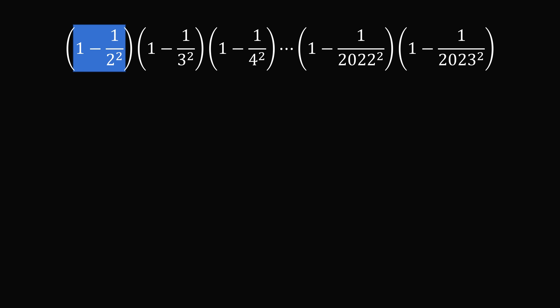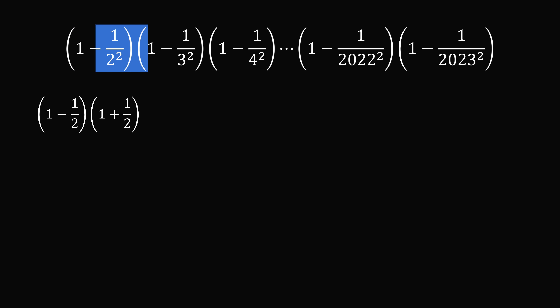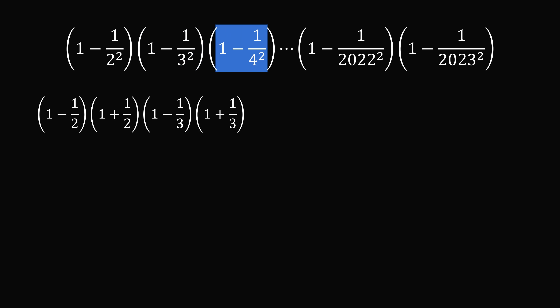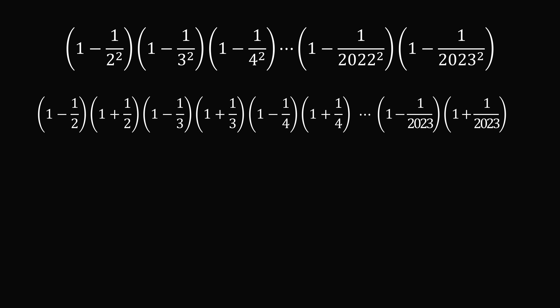Now let's solve the problem. The first term is a difference of squares, so we factor it as 1 minus 1 half multiplied by 1 plus 1 half. The second term is also a difference of squares: 1 minus 1 over 3 multiplied by 1 plus 1 over 3. Every single term is a difference of squares, so the next is 1 minus 1 over 4 multiplied by 1 plus 1 over 4, and we continue all the way to the final term.